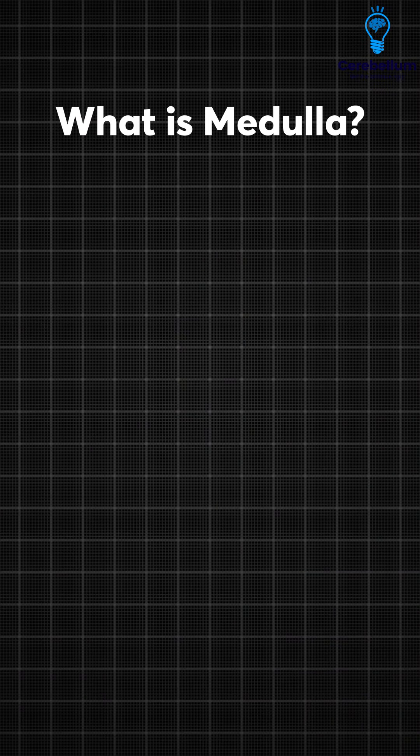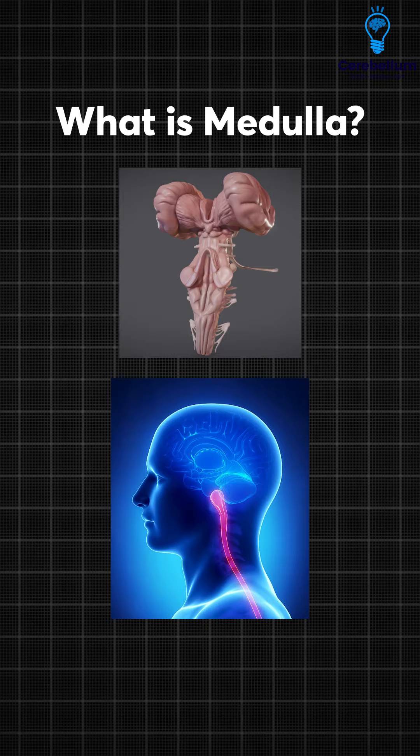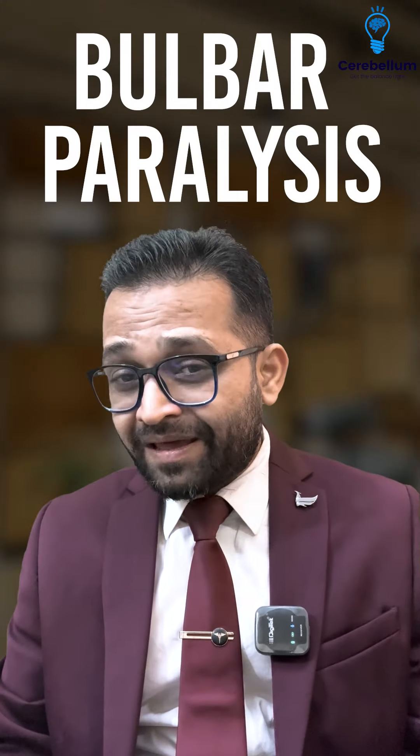In Anatomy it is clearly written what the medulla is. Medulla means a bulb-like dilated structure. So damage to the medulla is known as bulbar paralysis.